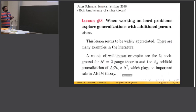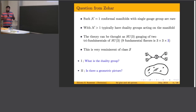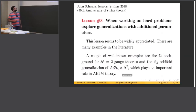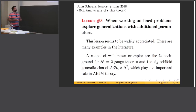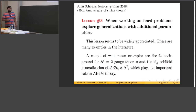A couple of months ago, I remembered these questions and suddenly understood that in the last couple of years we did develop a machine which translates cute observations to physical results — and that's what this talk will be about. We will try to answer these questions posed by Zohar using the modern technology that we acquired in the last two or three years. This is lesson number three from John Schwartz: when working on hard problems, explore generalizations with additional parameters. The additional parameters we will add to our story is to embed this four-dimensional theory into a six-dimensional picture.